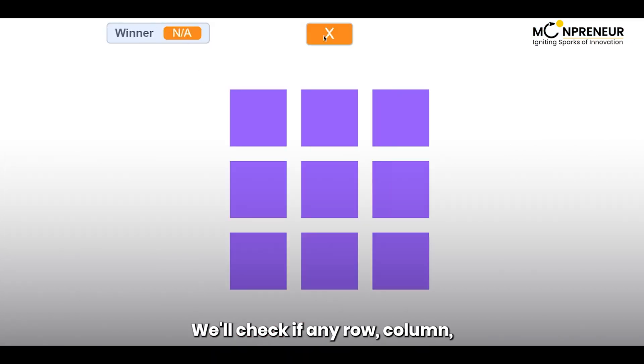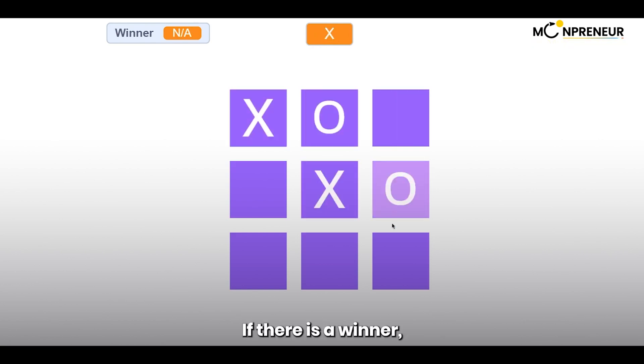We'll check if any row, column, or diagonal has three X or O in a row. If there is a winner, we'll display a message and end the game.